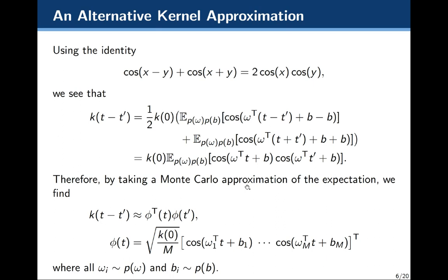We can take a Monte Carlo approximation of this expectation. This time we only have cosines, but we now have to sample spectral weights and constants b, which are sampled from the uniform distribution from zero to 2π.